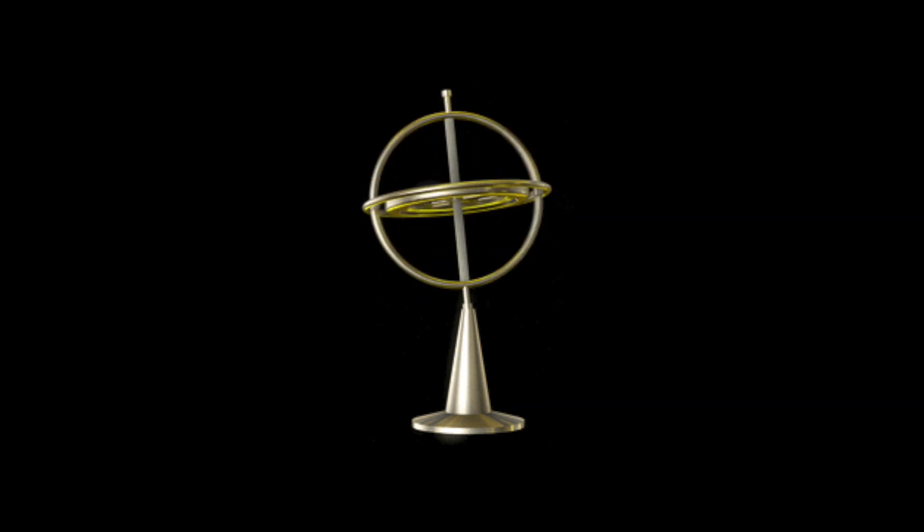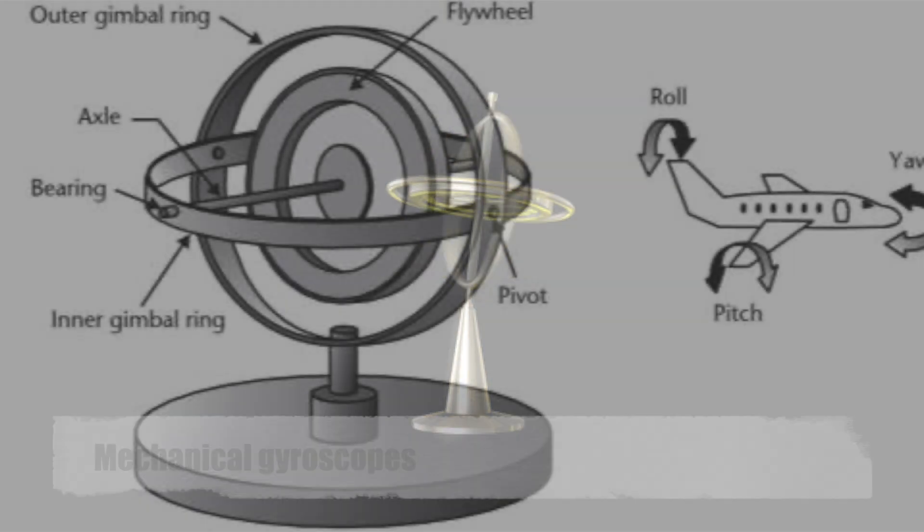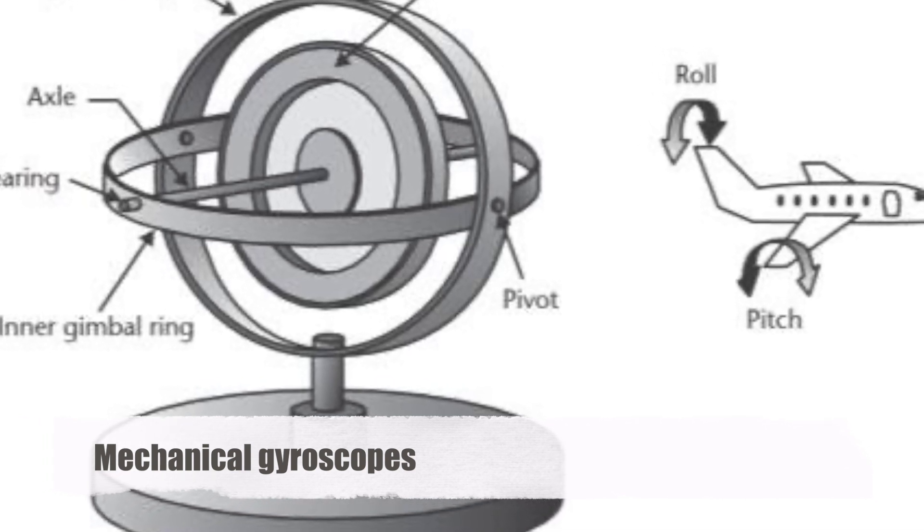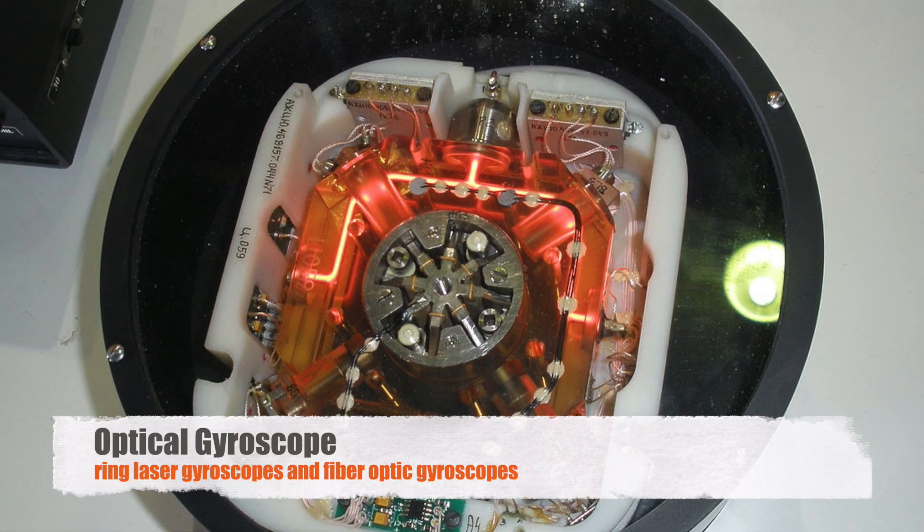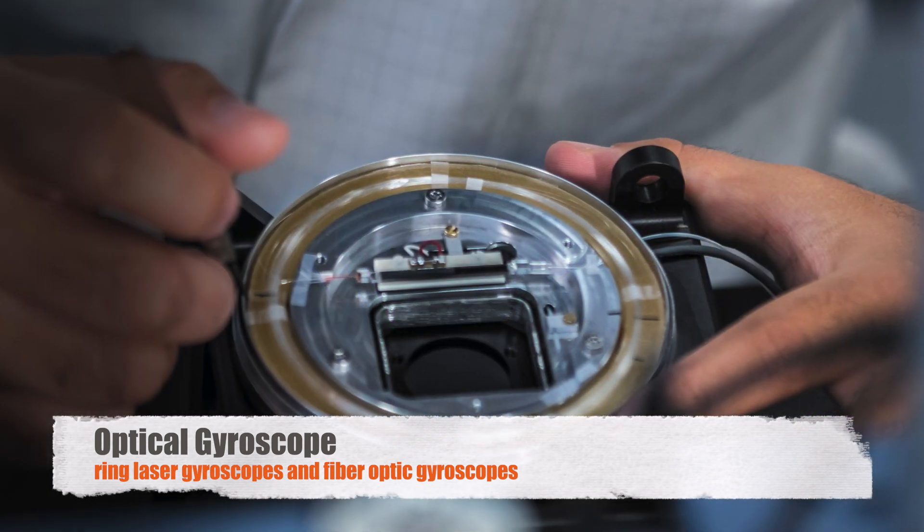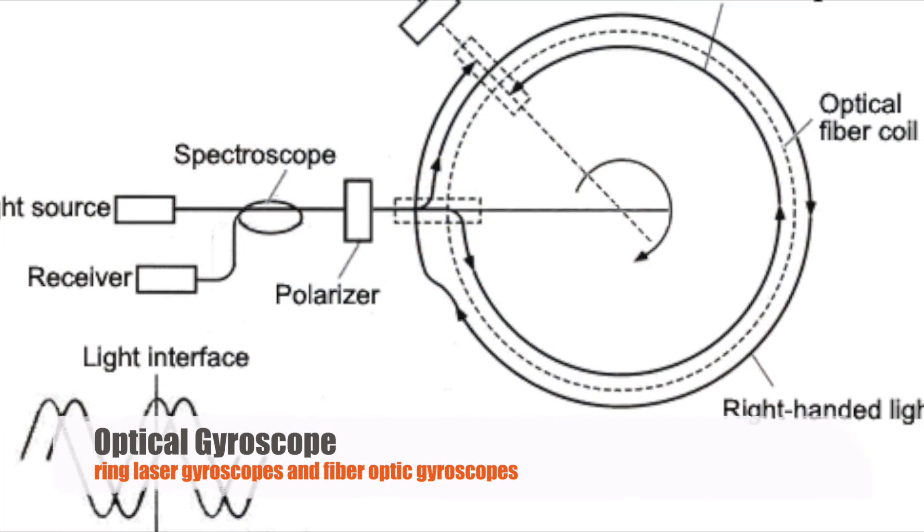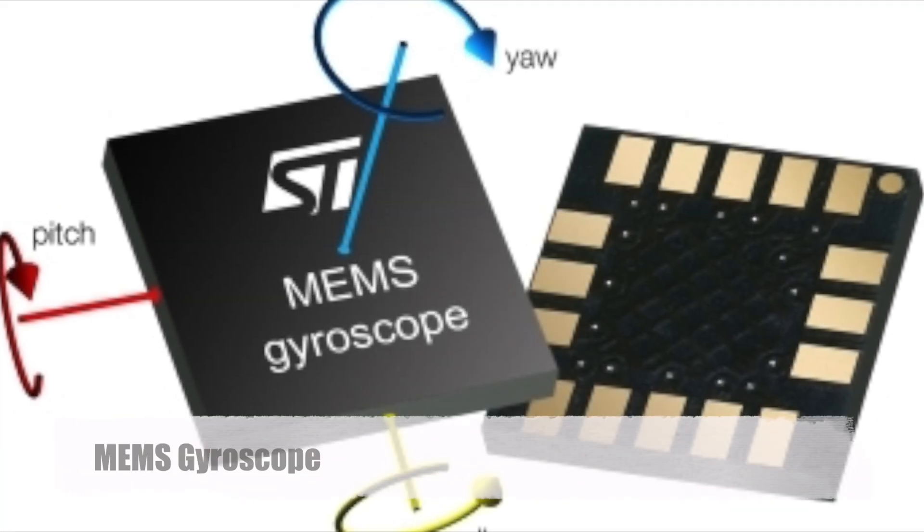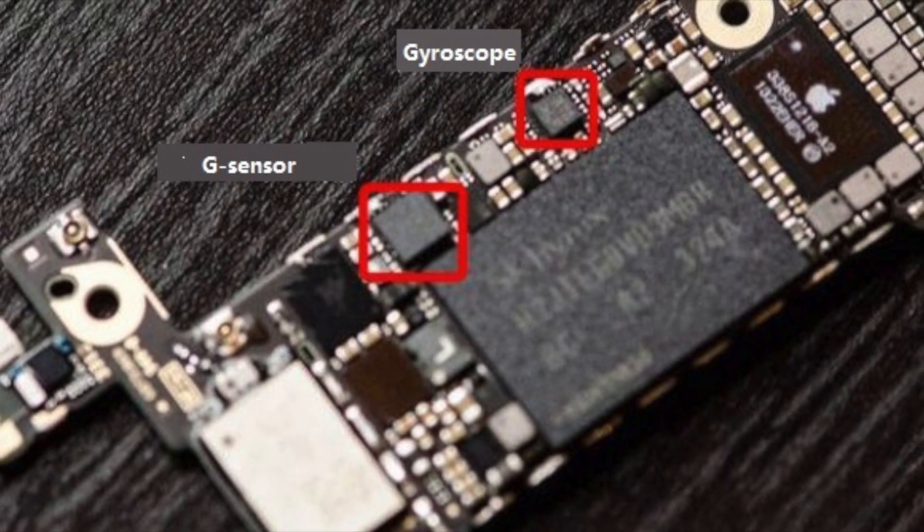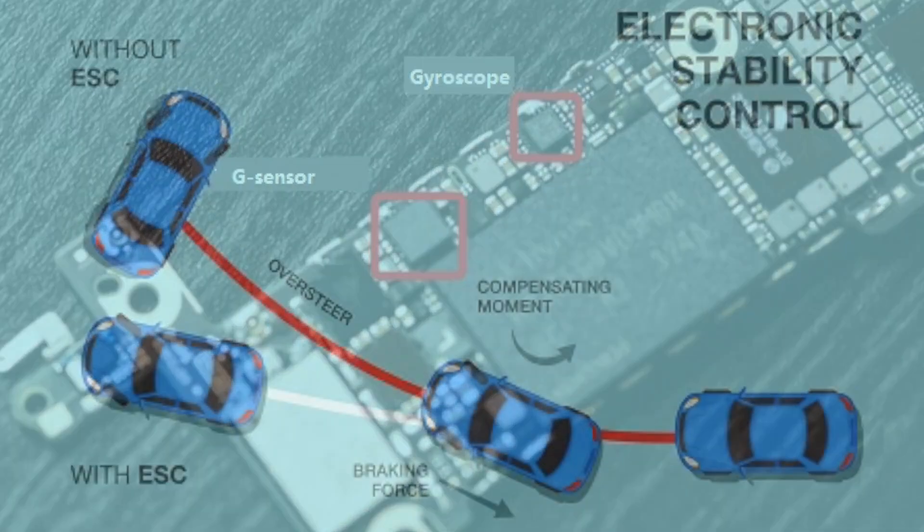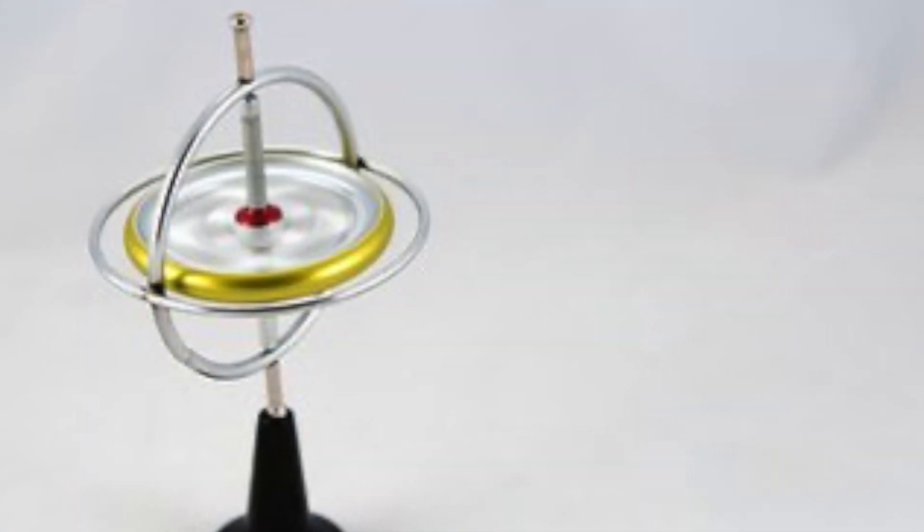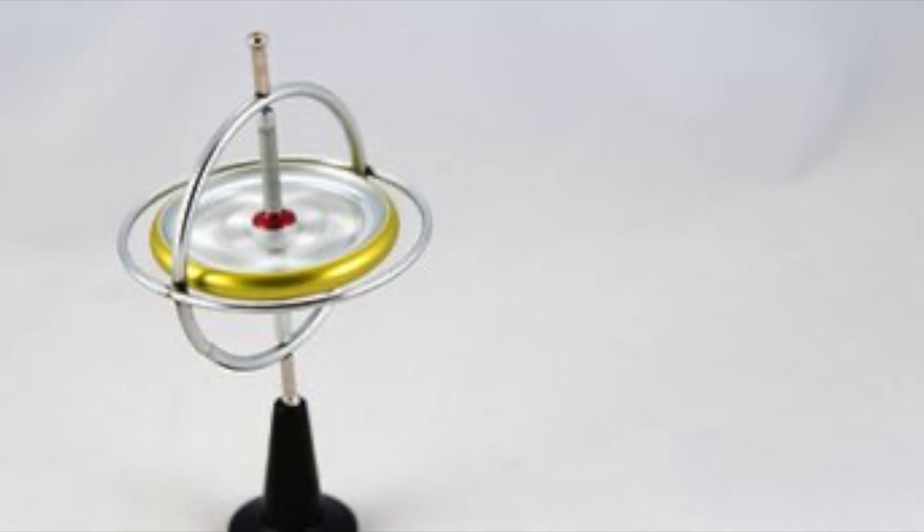Gyroscopes come in various forms, each suited to specific applications. Mechanical gyroscopes, with their spinning wheels, are the traditional type and are still used in some applications. Optical gyroscopes, such as ring laser gyroscopes and fiber optic gyroscopes, use the interference of light to measure rotation and are commonly found in high-precision navigation systems. MEMS gyroscopes, which are made using microfabrication technology, are small, low-cost, and used in consumer electronics, automotive applications, and small drones. Despite their differences, all these gyroscopes operate on the same fundamental principles of physics.